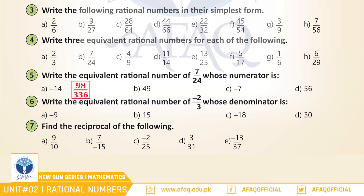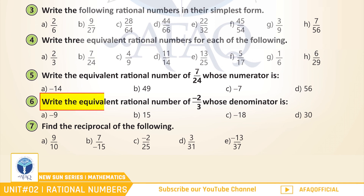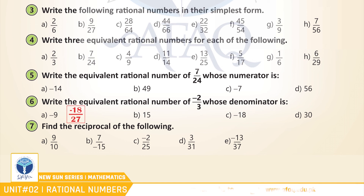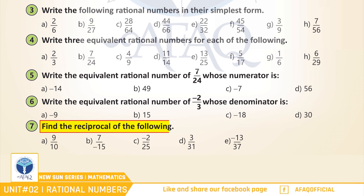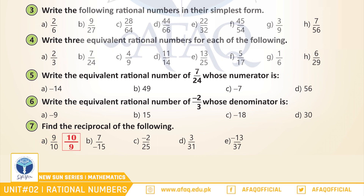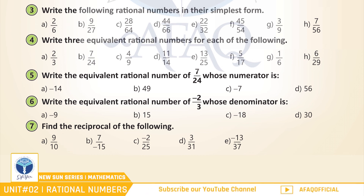اس سوال کے اگلے پارٹس آپ نے خود حل کرنے ہیں. Question number 6: Write the equivalent rational numbers of minus 2 by 3 whose denominator is A: minus 9. Good. Minus 18 by 27. اسی طرح سے اگلے پارٹس آپ نے خود حل کرنے ہیں. Question number 7: Find the reciprocal of the following. A: 9 by 10. Good. 10 by 9. اور اسی طرح سے اگلے سوال آپ نے خود حل کرنے ہیں.